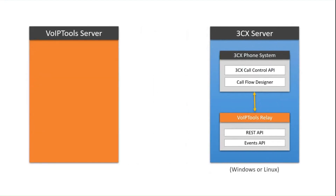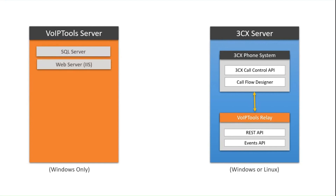Our applications communicate to the relay, and then the relay communicates with the 3CX server. The placement of where the relay is installed is important — it is installed on the 3CX server, but nothing else. Just the relay is installed directly on your 3CX server. Our applications, in contrast, are installed on a separate server, and typically you'll have a Microsoft SQL Server there. The free Express edition is adequate for most customers.